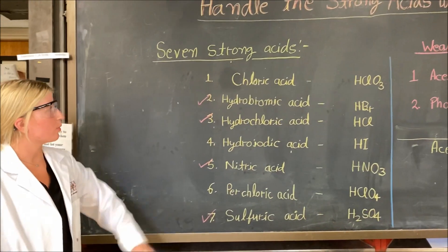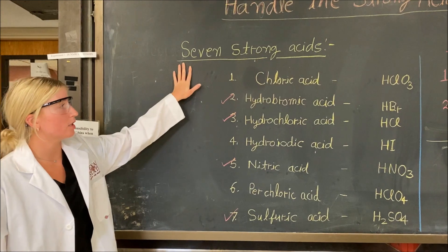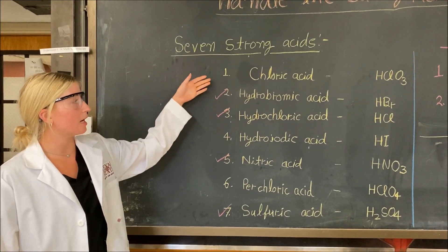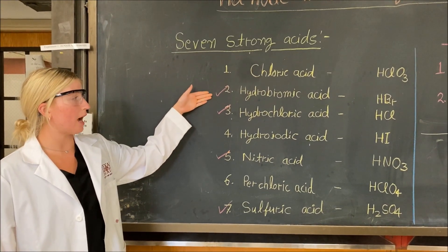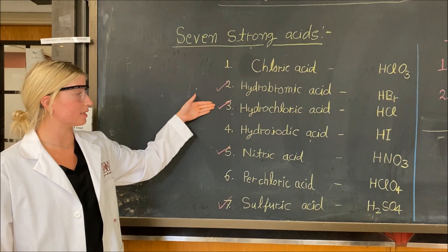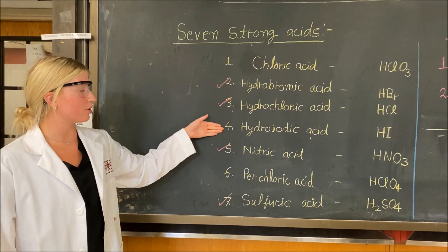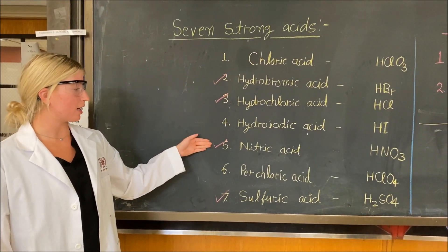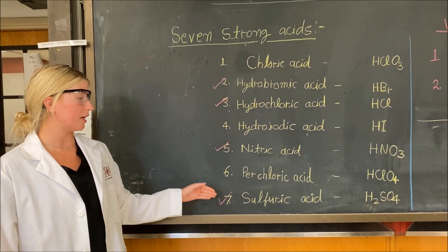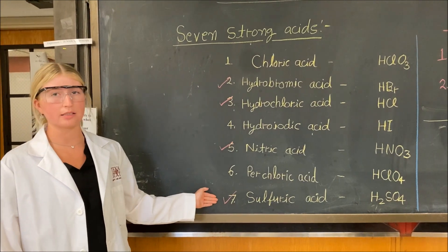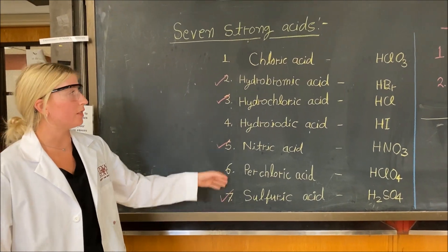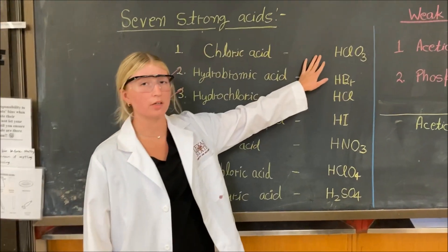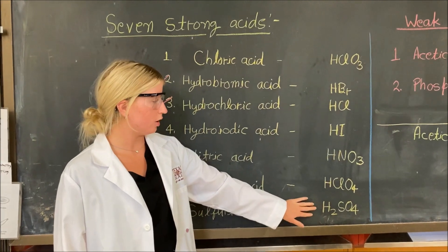We'll start with the seven strong acids. We have chloric acid, hydrochloric acid, hydroiodic acid, nitric acid, perchloric acid, and sulfuric acid. These are their chemical names and these are their formulas right here.